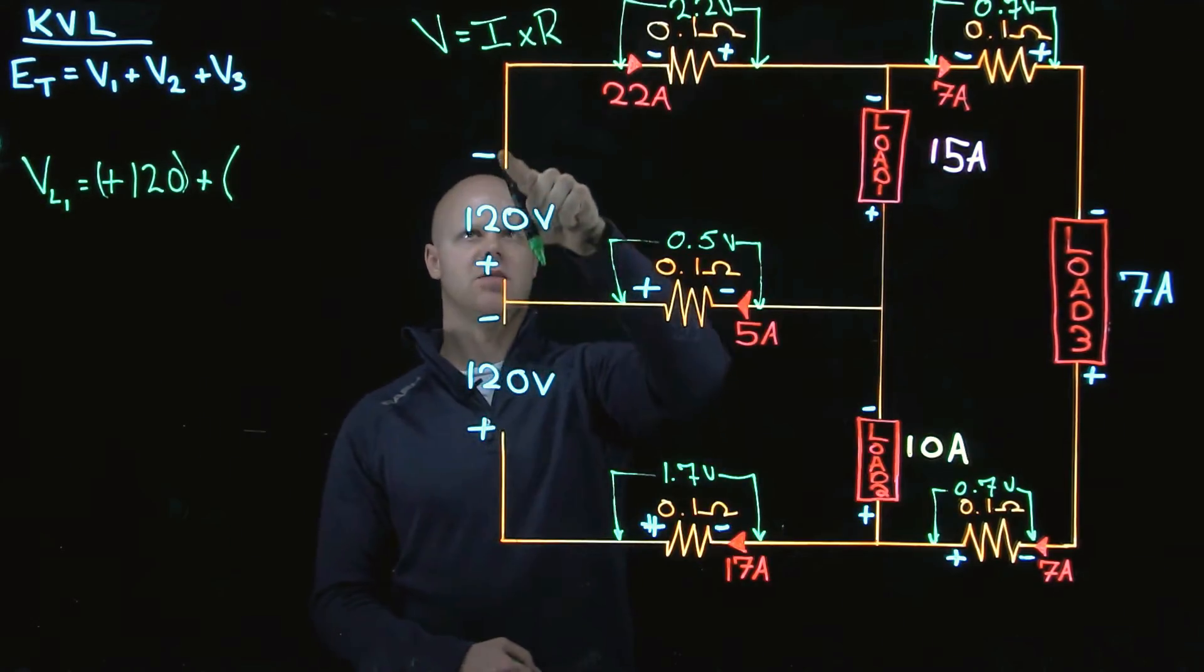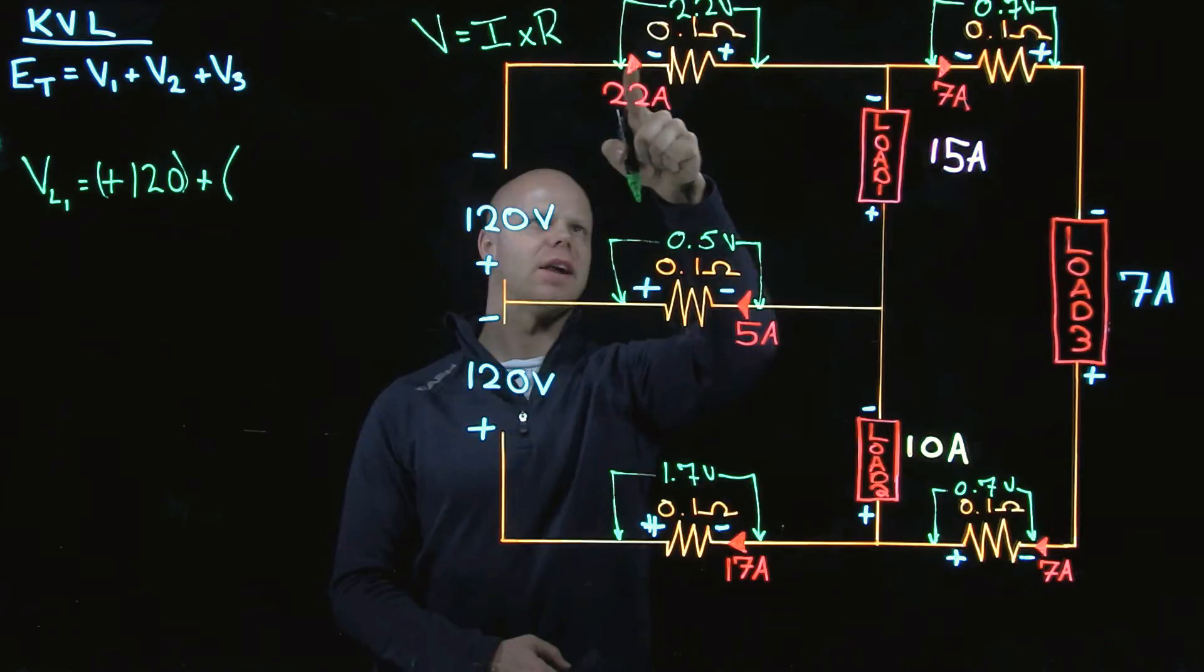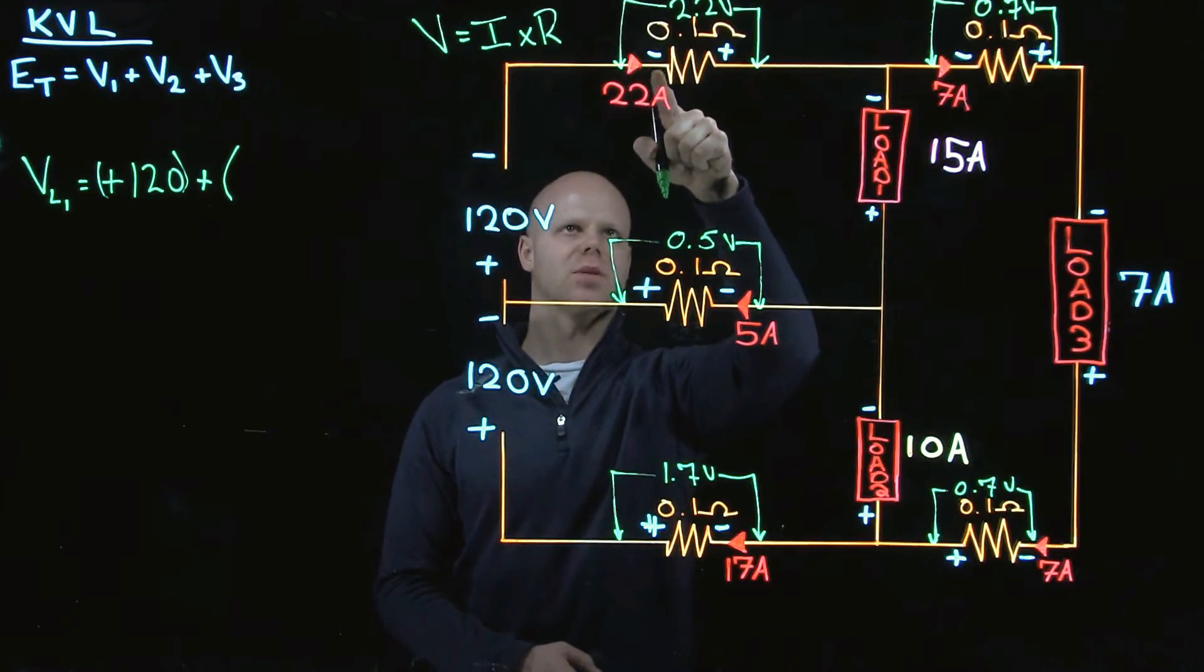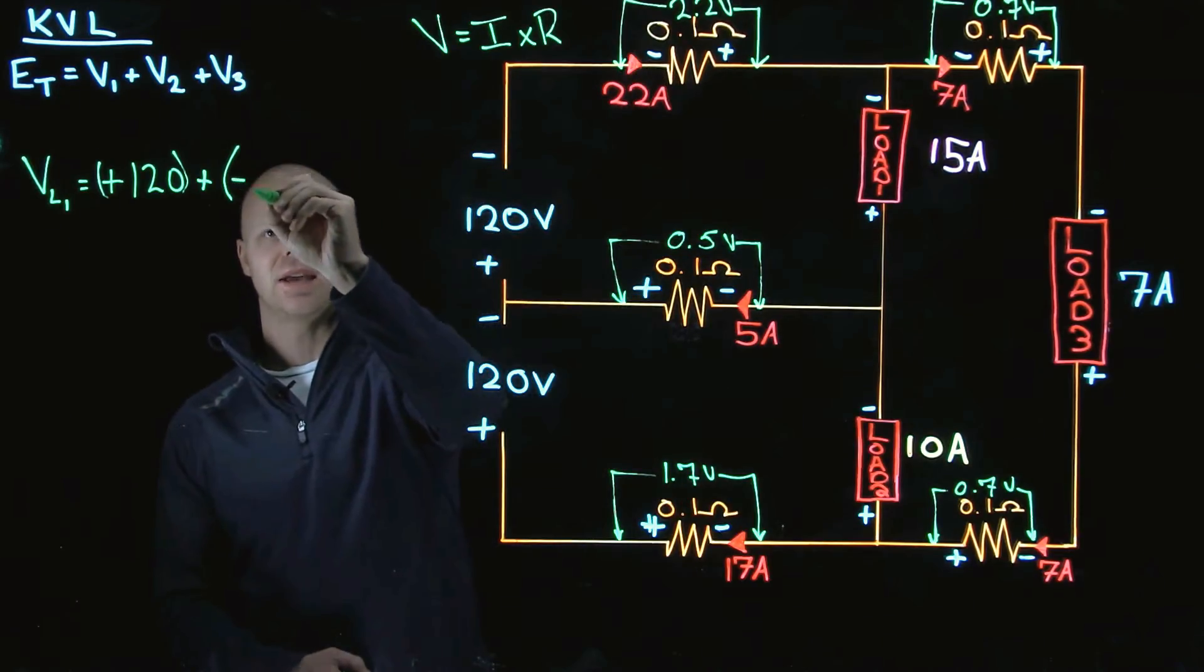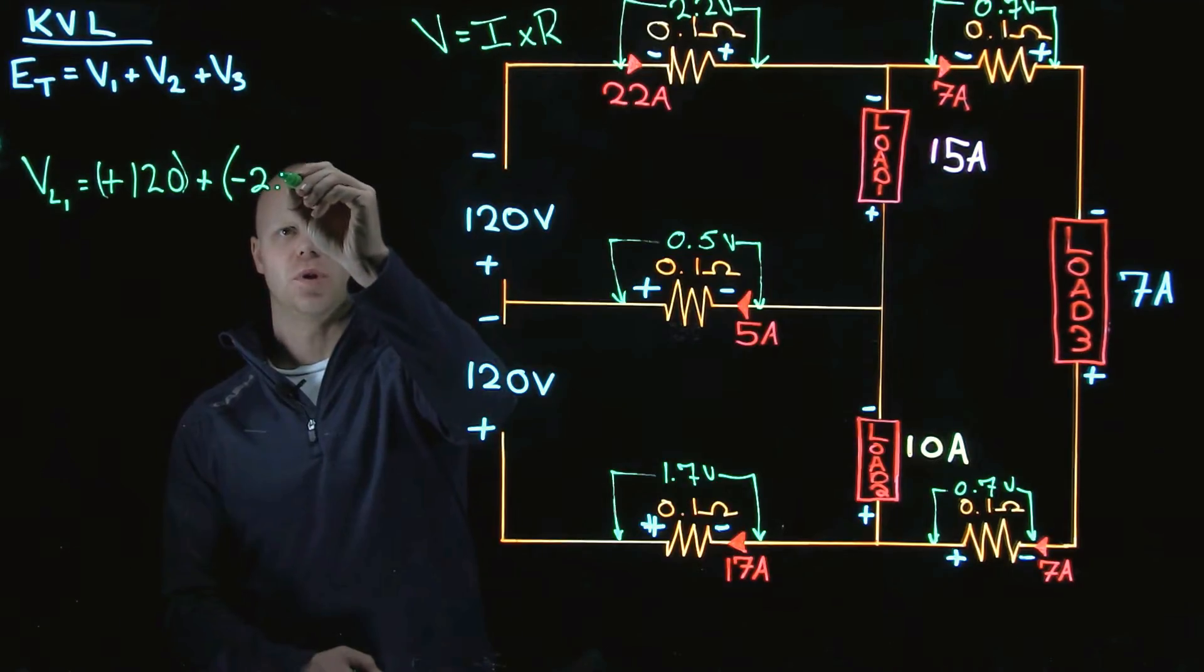We are adding this together and paying very close attention to polarity. So I am at a positive. I go to my next load. The very first polarity that I hit at my next load, that's what I will add. So I am actually adding a negative 2.2 volts.